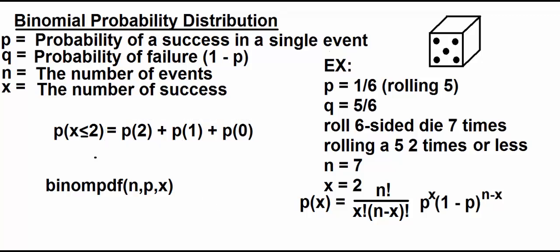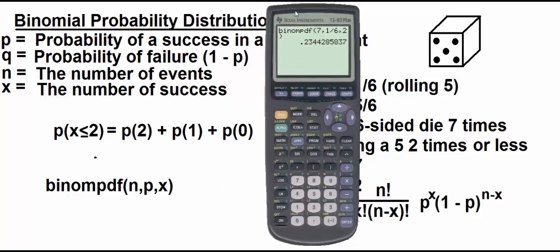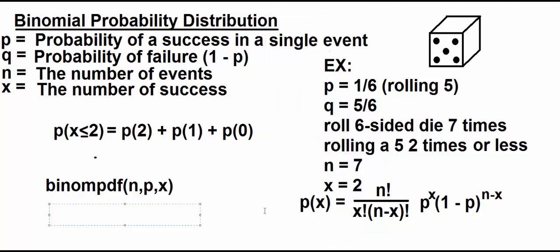Now I can do that in my calculator. I could add all three of these probabilities together. I could do binompdf seven one-sixth two, binompdf seven one-sixth one, binompdf seven one-sixth zero. But that's a little cumbersome. So there's a quicker way to go about doing that in the calculator. And that is with the binomcdf.